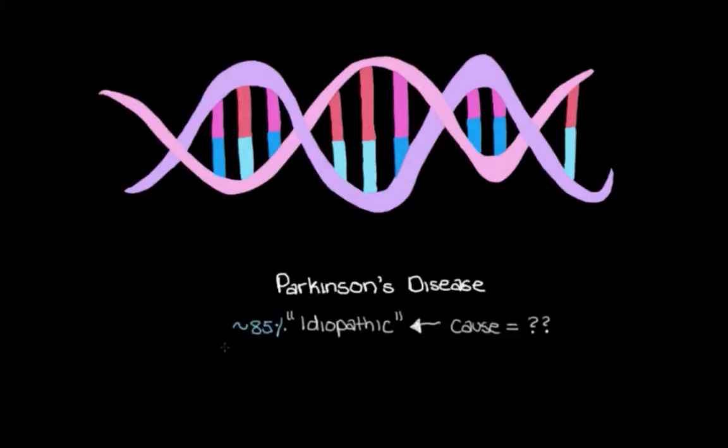But in a handful of people with Parkinson's disease, about 15%, we actually do know what caused the disease. And for these people, something's actually gone wrong with at least one of their genes.